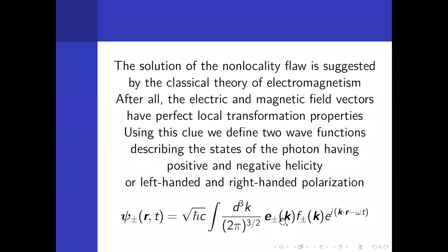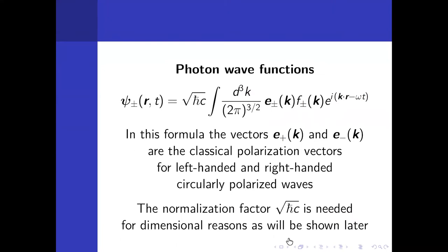What does it mean that it's non-local? That means that when we transport this by making a simple transformation, even a rotation, then the value of this function here of r does not depend exclusively on the value of this function in the previous point before rotation, but it depends on all points in space. So this is clearly a non-local object and does not work. Physics, especially relativistic physics, must be local. So the solution is suggested by the classical theory of electromagnetism.